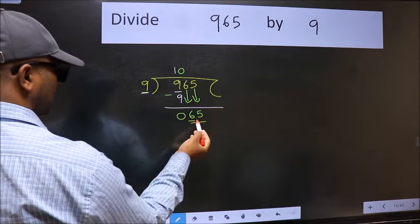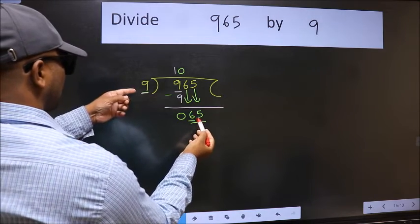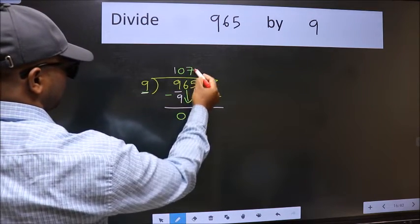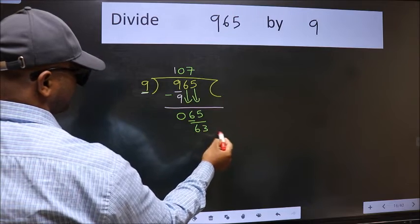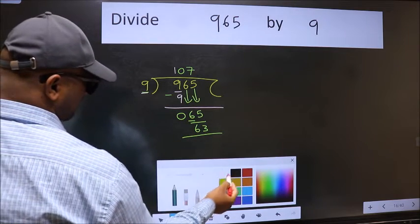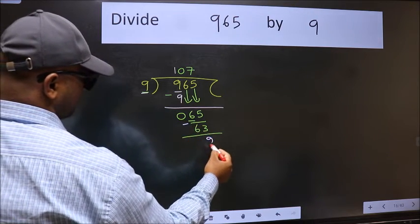Now 65. A number close to 65 in 9 table is 9 times 7, 63. Now we should subtract. We get 2.